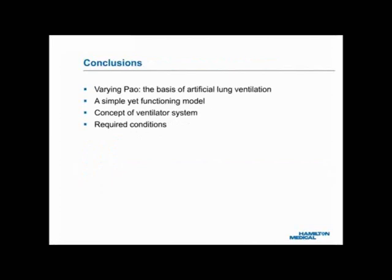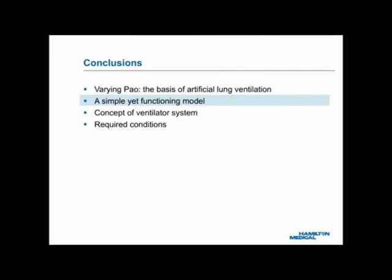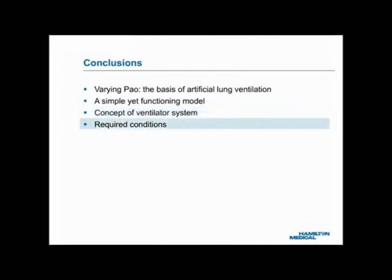To sum up, in the last training unit, Lung Ventilation, Natural and Artificial, we learned that artificial lung ventilation is achieved by varying airway opening pressure, or PAO. In this unit, we modified a balloon inflation system into a simple but fully functioning model of a ventilator system. This model helped us understand how a varying PAO can be generated to intermittently inflate and deflate a balloon. Furthermore, a critical concept of a ventilator system was introduced: the tool for mechanical ventilation therapy is the ventilator system, and the ventilator is just one of the parts required within the system. Finally, we discussed the conditions required for a ventilator system to work as designed. If one of the conditions is not fully satisfied, the system will not work properly or will not work at all.